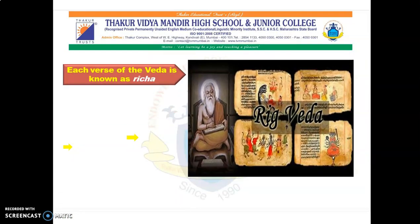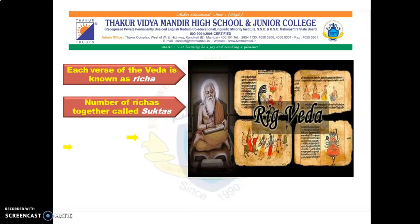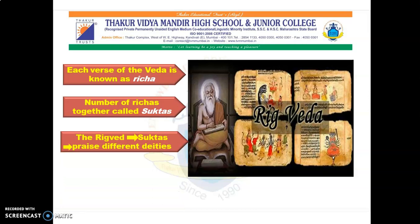The first is Rig Veda or Rig Veda Samhita. Each verse of the Veda is known as Richa. When many Richas are put together to praise a deity or God, that poetic composition is called Suktas. So Richas are verses, and when many Richas are joined together they are called Suktas. Rig Veda has many Suktas to praise different deities — idols of God — with different Suktas for each.